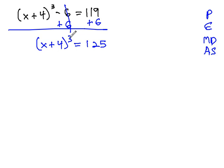Now, we can get rid of a third power with a third root, as that's the only thing remaining on the left side. Third power and third root go away, giving us x plus 4 equals the cubed root of 125, which is 5.